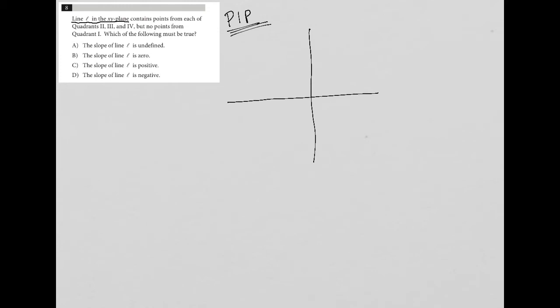I like to just draw my XY plane. So line L in the XY plane contains points from each of the quadrants 2. So first of all, let's label our quadrants. So this is quadrant 1, this is quadrant 2, this is 3, and this is 4. So hopefully you recall that from school. If not, here you go. Make sure you remember that.